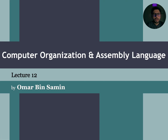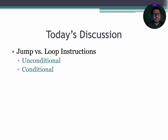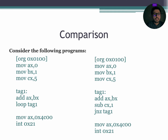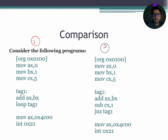Hello and Assalamualaikum. In today's lecture, we are going to compare jump and loop instructions. Let's begin our today's lecture. For better understanding of jump and loop instructions, let's consider the following two assembly language programs. Let's call the left-hand side program as program 1 and the right-hand side program as program 2.